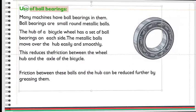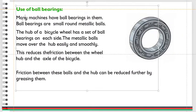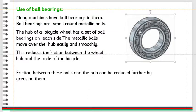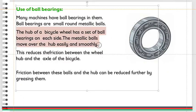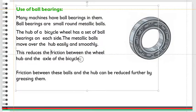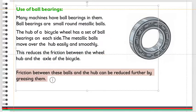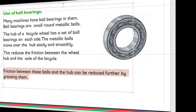Use of ball bearings. Many machines have ball bearings in them. Ball bearings are small round metallic balls. The hub of a bicycle wheel has a set of ball bearings on each side. The metallic balls move over the hub easily and smoothly, reducing the friction between the wheel hub and the axle of the bicycle. Friction between these balls and the hub can be reduced further by greasing them.